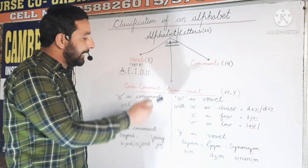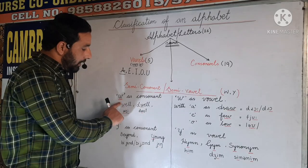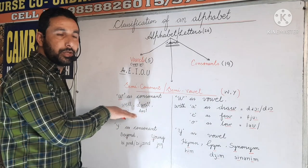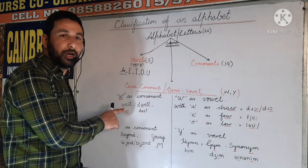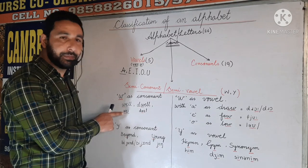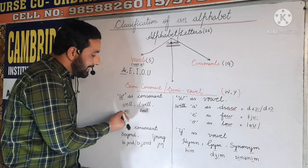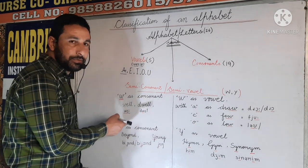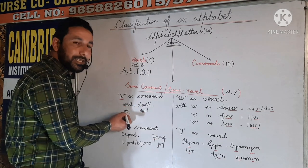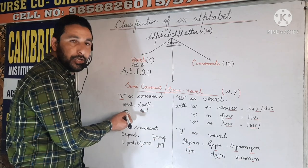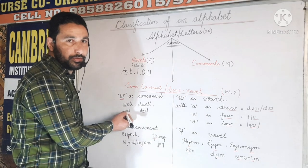That is why they are called semi-consonants and semi-vowels. I have written here a few examples where W is considered as a consonant. Let us take the example of 'well.' I have written the phonetic symbols under the word so that you can find it easier whether it is a vowel sound or consonant sound. The W in 'well' has a sound /w/, and in phonetics it is considered a consonant sound.